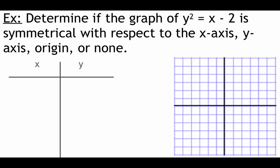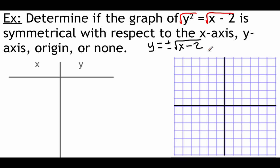We're going to graph the equation y² = x - 2 and then decide what type of symmetry it has — x-axis, y-axis, origin symmetry, or none of the above. Since we've got y squared, we need to get y by itself. We take the square root of both sides, remembering to put the plus or minus in front. So we get y = ±√(x - 2). Then we plug in some x values to get y values and graph it out.